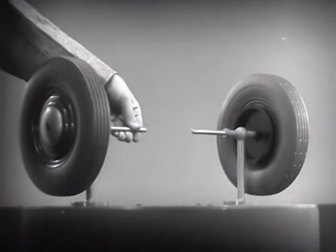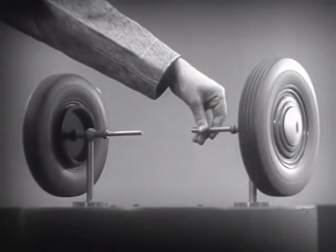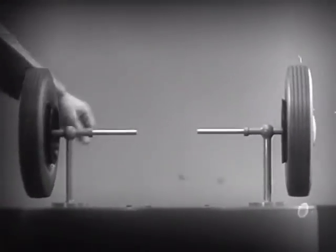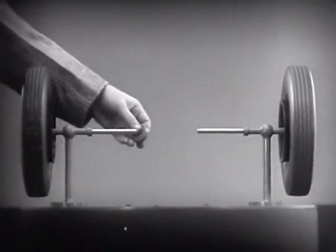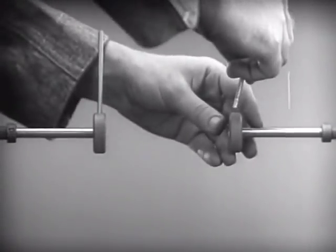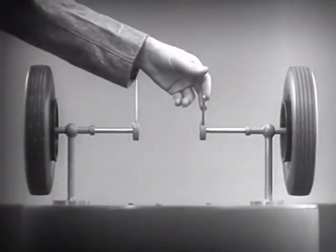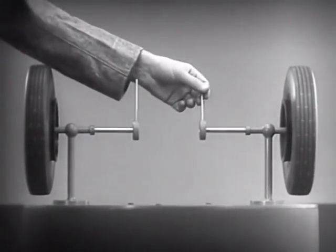These two wheels are mounted on separate axles and supported by a frame so that they can revolve freely at different speeds. Let's fasten a spoke on the inner end of each axle so that by turning the spokes, we can turn each wheel separately.